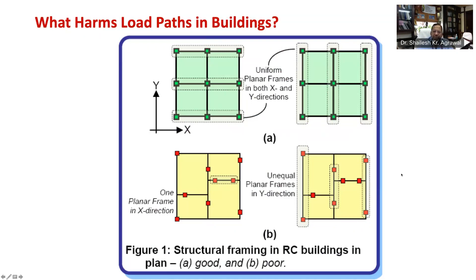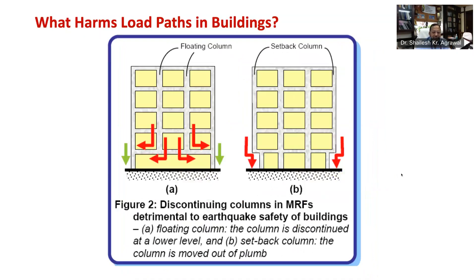Now let's understand discontinuity in vertical elements through figure 2. Discontinuing a load carrying member along its length or height is harmful to earthquake performance of the building. As seen in figure 2A, it is not desirable to discontinue a column in a lower story of a building. Such columns are called floating columns and are to be avoided. When a column is pushed out of vertical line in a lower story, as seen in figure 2B, the forces carried by the upper portions of the columns have to bend at the setback locations to continue towards the foundation. Such columns are called setback columns and are not desirable.